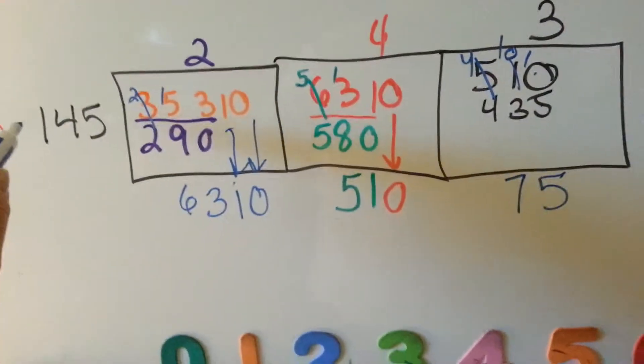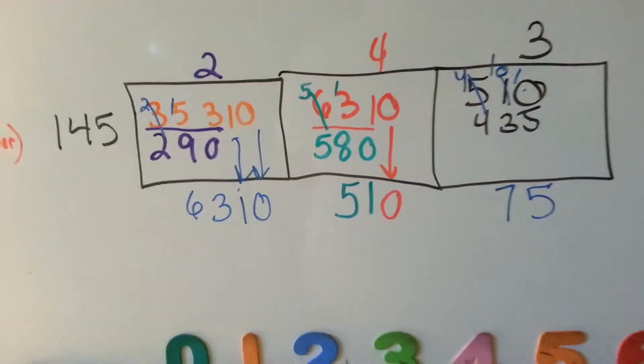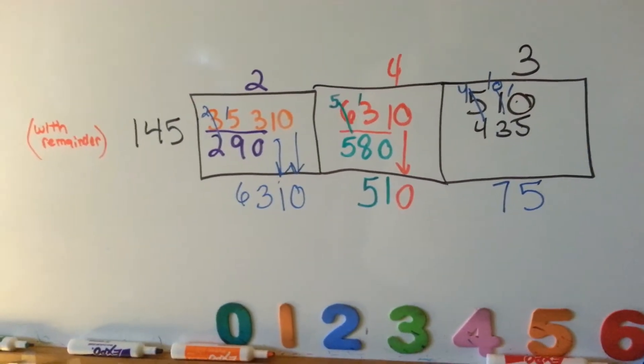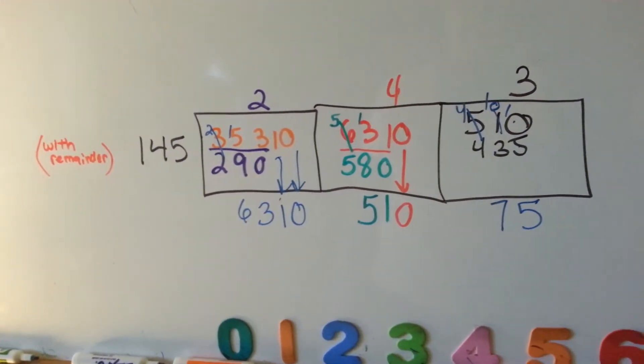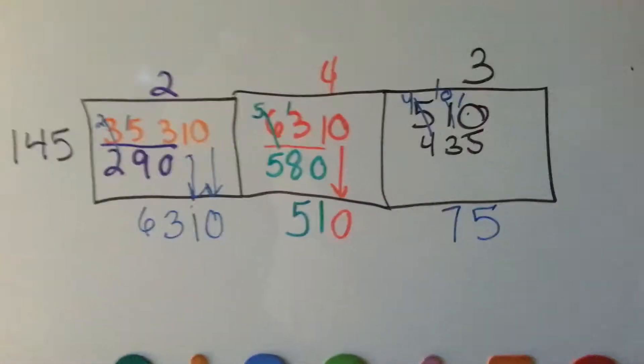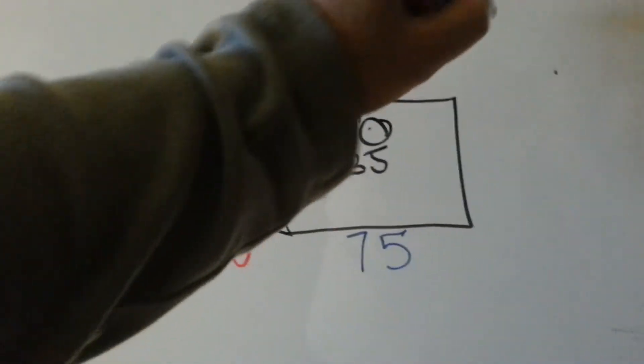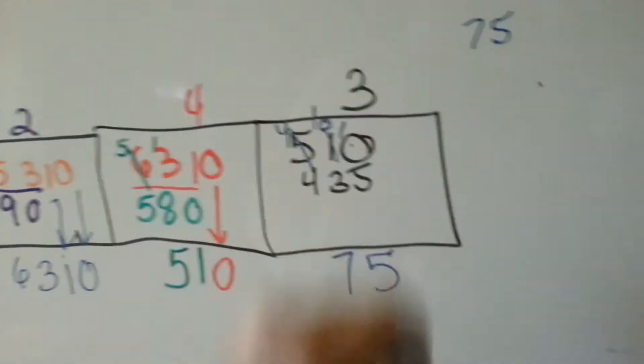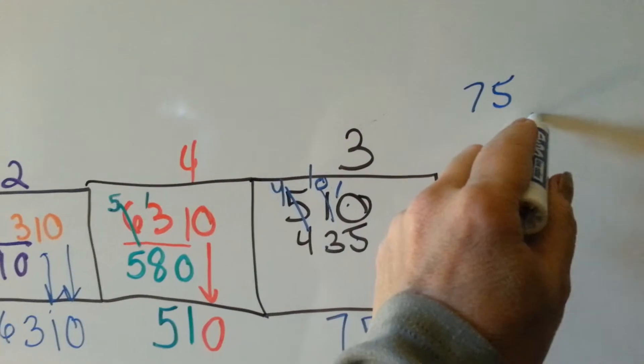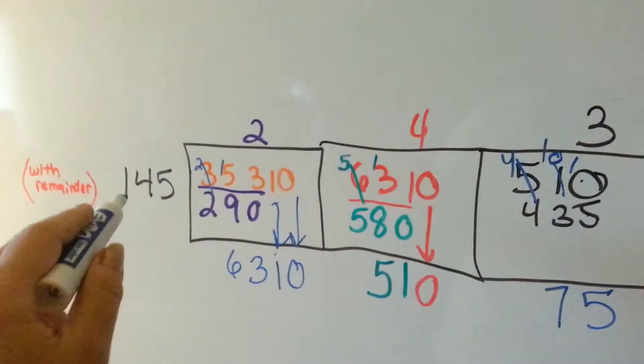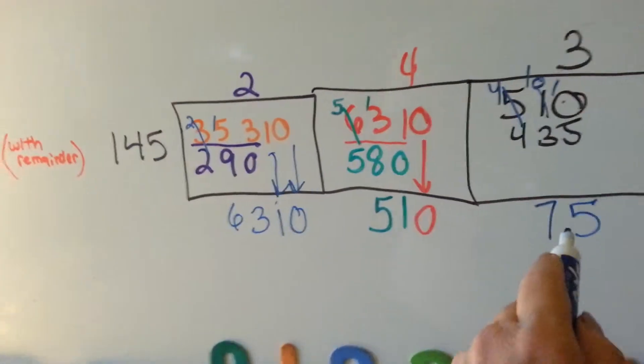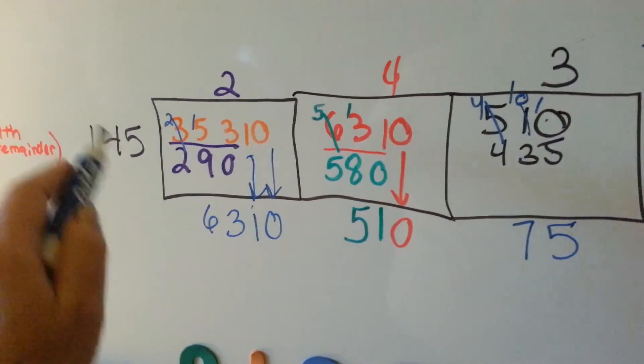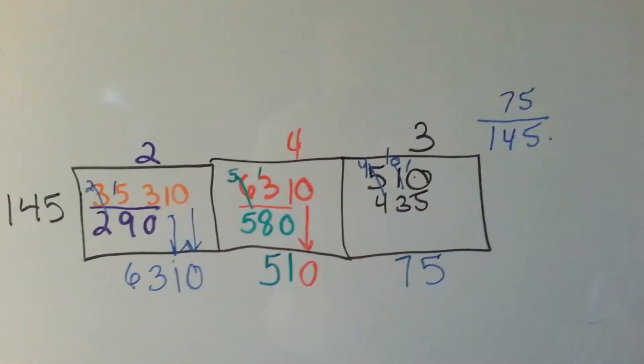So, now we have 145, and there's a 75 there. That's our remainder. This 75 is going to go up here. We're going to draw a line, and we're going to put the 145 below it. Because when you have remainders, this is actually the numerator, and that's the denominator in a fraction. See that?